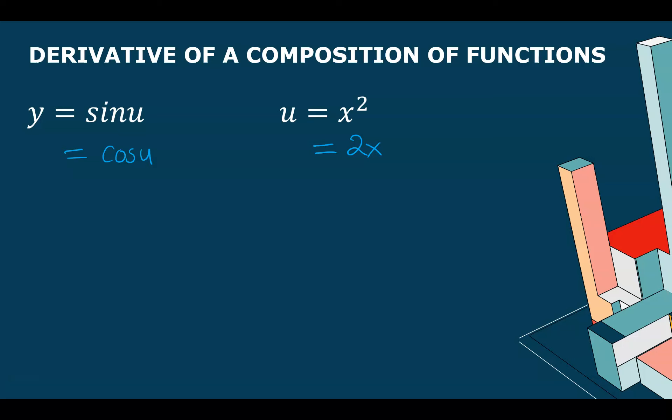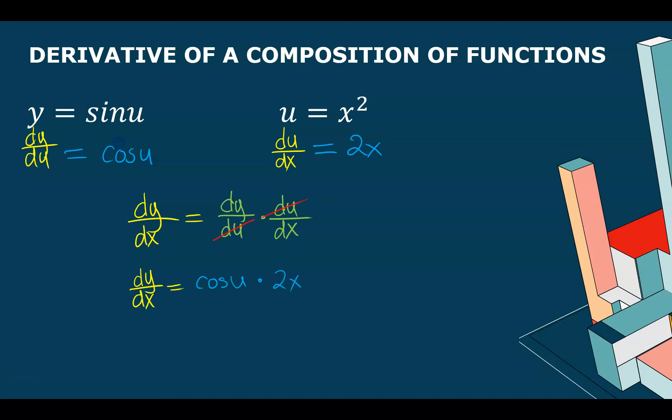The derivative of sin(u) with respect to u is cos(u), and the derivative of x² with respect to x is 2x. The notation dy/du means the derivative of y with respect to u, and du/dx means the derivative of u with respect to x. We want dy/dx. If you multiply dy/du times du/dx, the du's cancel and you just get dy/dx. So dy/du is cos(u) and du/dx is 2x.